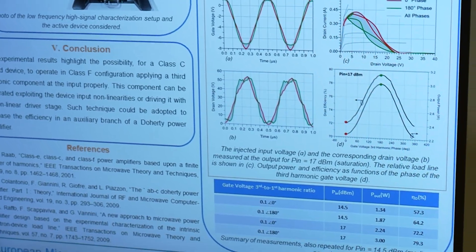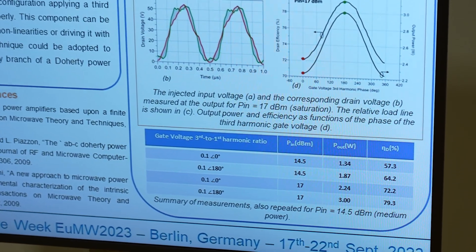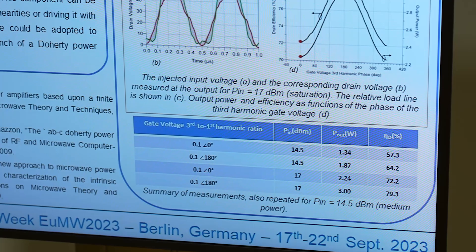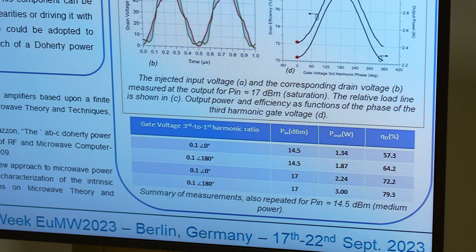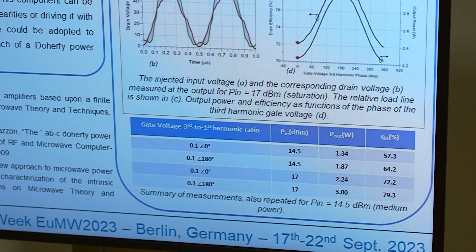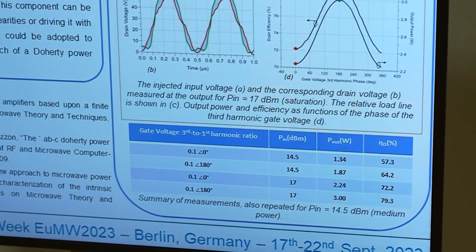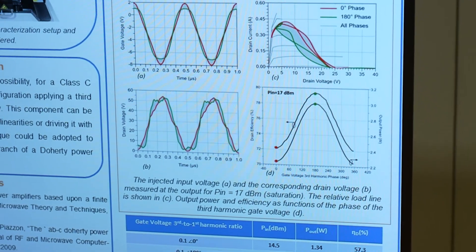In particular, we can see that the output voltage waveform is flattened at the top, so it's typical of a Class F configuration, while the load line is extended at the top, which is also typical of a Class F configuration.